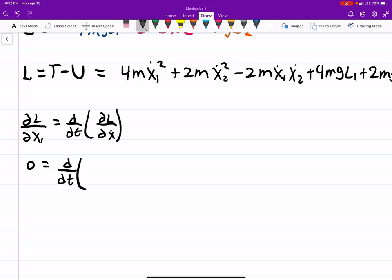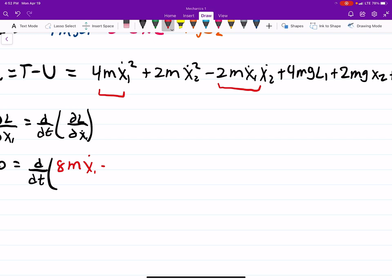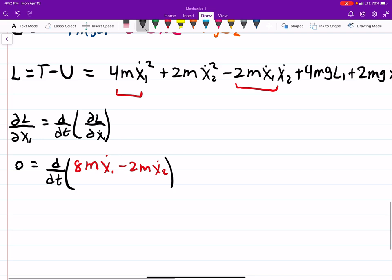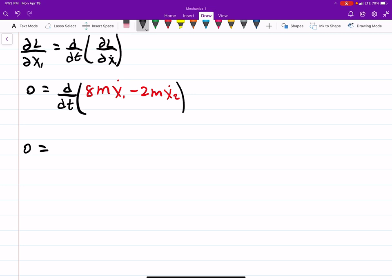Alright so we're going to have to do x dot now there is x dot x1 dot here this should be a 1. So for example here we would do a power rule and that turns into 8m x dot 1 and then over here minus 2m x dot 2. So let's see that's 0 equals I'm going to factor out a 2m and then taking its derivative I get 4 x1 dot minus x2 dot.